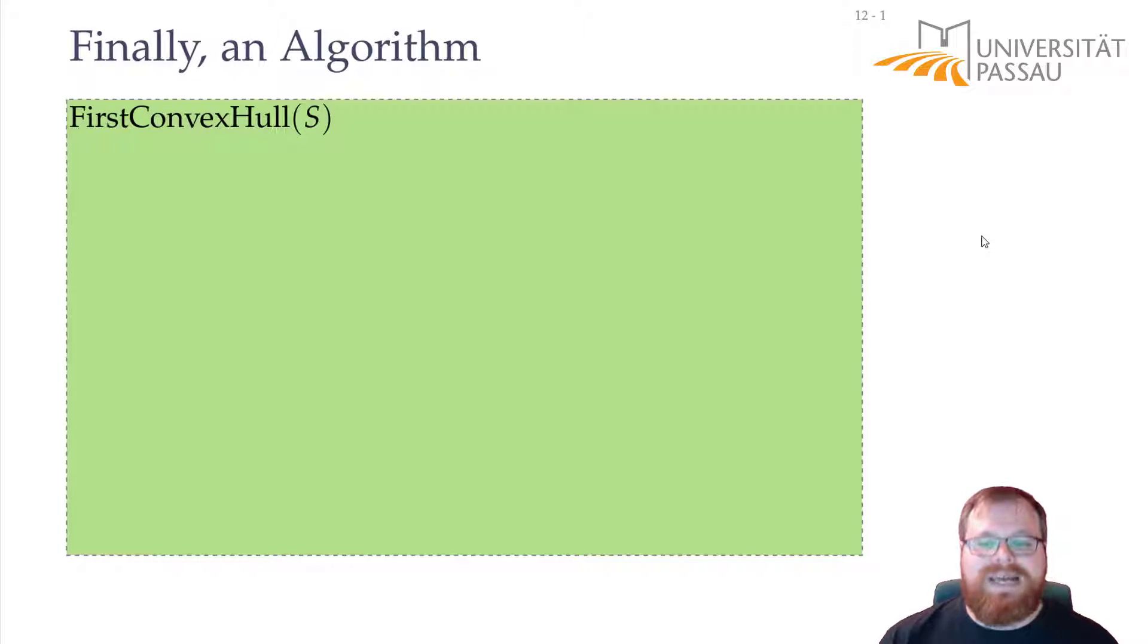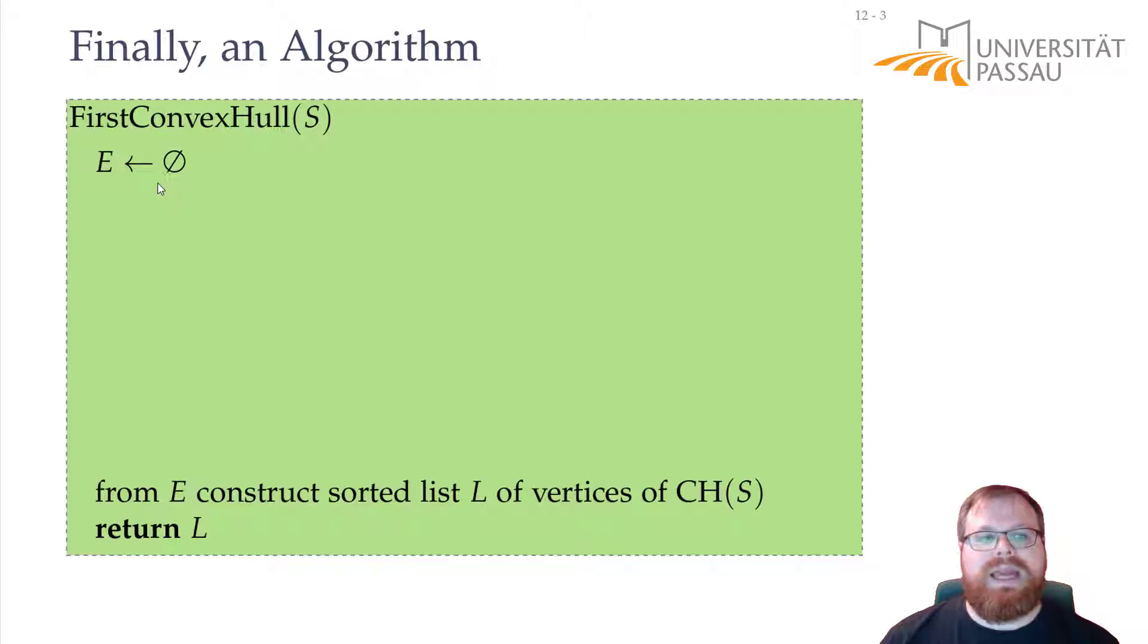This is our first algorithm for a convex hull. We are given the point set S and we want to create an edge list that describes the convex hull in the correct order. So in the end, if we have an edge list, we want to construct a sorted list of vertices on the convex hull. In the first step, we only want to find which edges these are. So let's try to do this. We just take any pair of points and not the same points twice and we do our test for them.